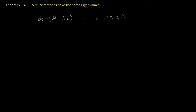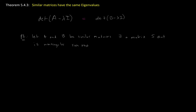So let's start off the proof. We're going to first assume that two matrices are similar. So let A and B be similar matrices. Then by definition, if they are similar matrices, there exists a non-singular matrix S. The non-singular part is important because that means it's invertible — that means the inverse of S exists. So there exists a matrix S that is non-singular such that A times S is equal to S times B.